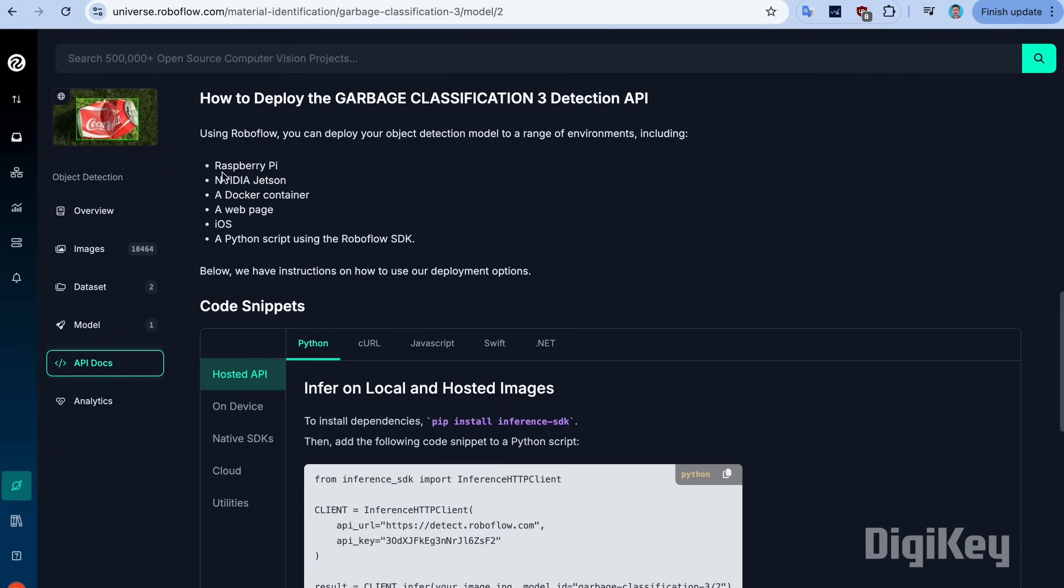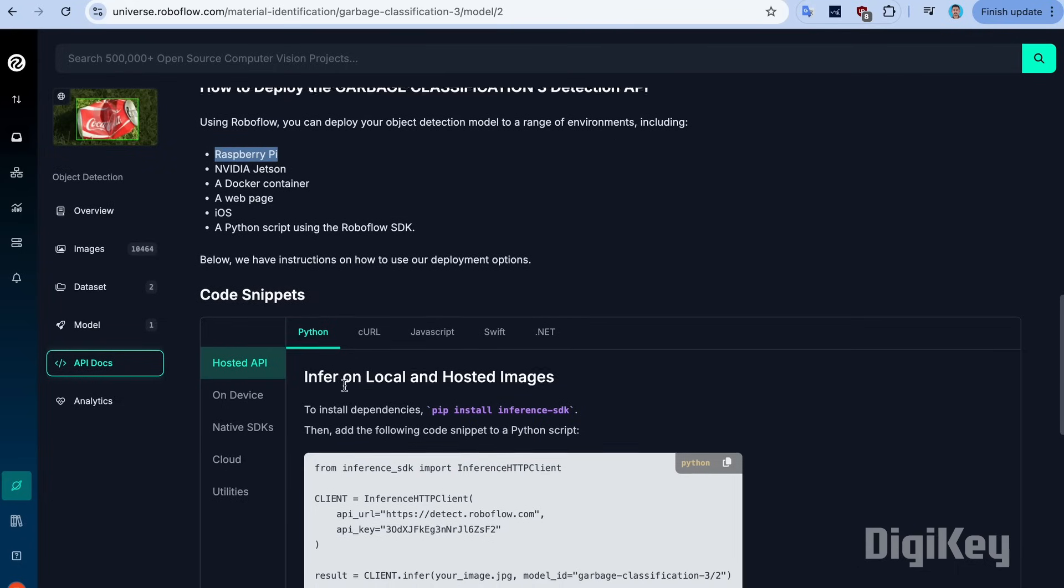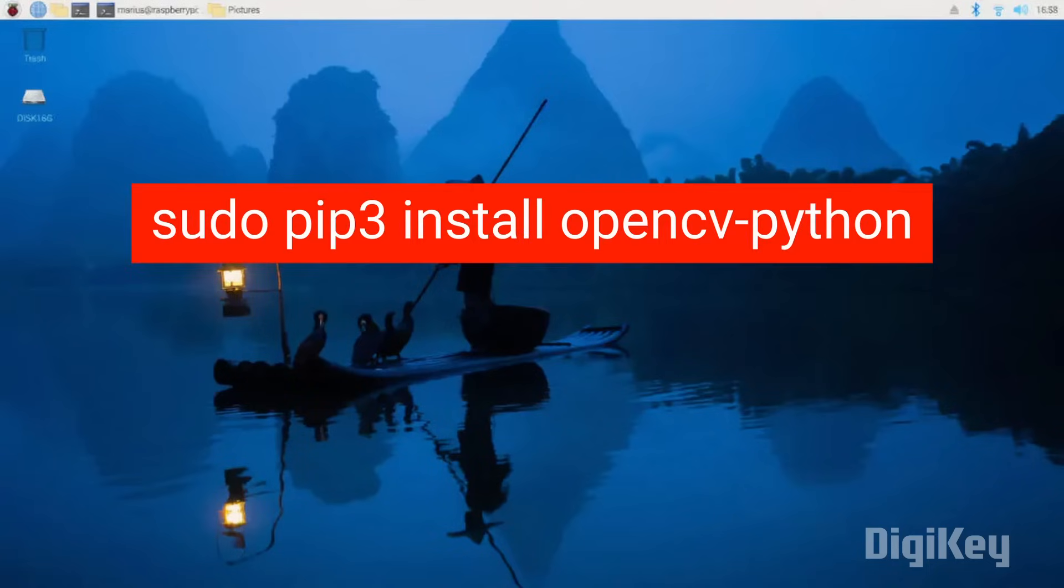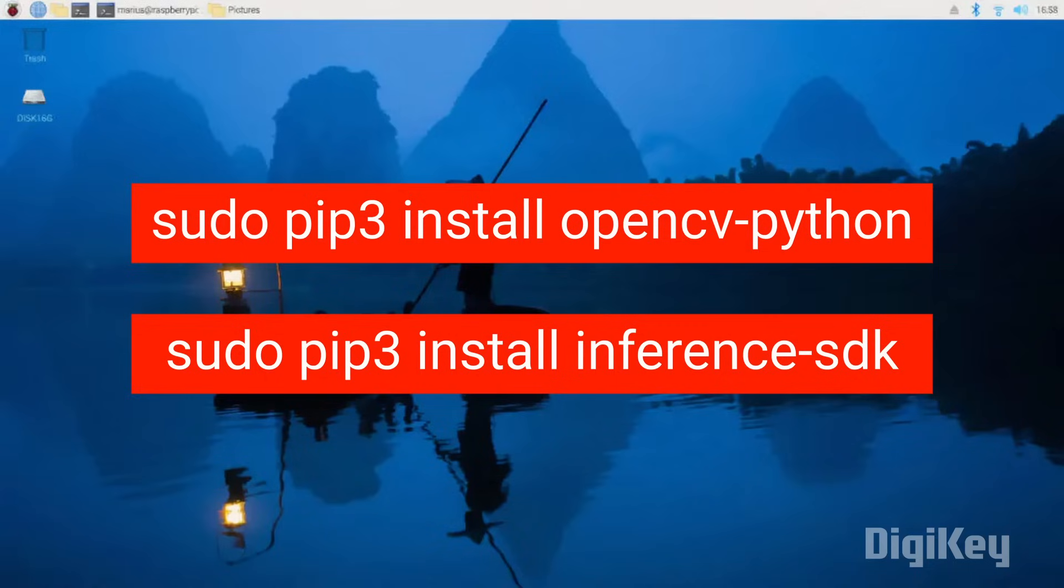To deploy this model on our Raspberry Pi, we will be using the inference SDK Python package. On a fresh install of Raspberry Pi, use these Linux commands to install the OpenCV and the inference SDK packages.